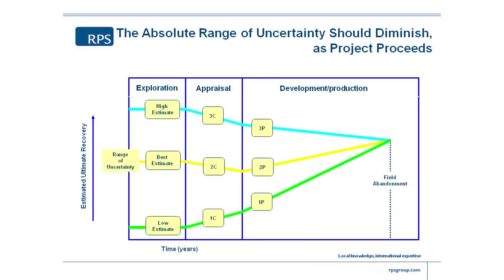As you progress on a project — and I'll slow down a little bit here because that's where the key parts are — this is the estimated ultimate recovery from an asset on the vertical scale on the left, and the time, the generic time scale on the bottom. The range of uncertainty and risk is in that vertical scale.